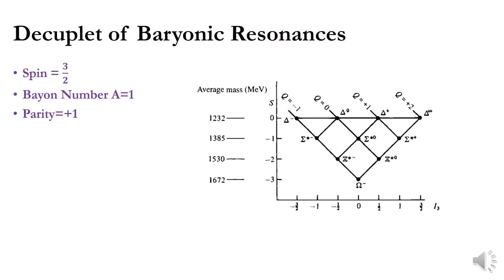There is another symmetrical figure: the decuplet of baryonic resonances. In the S-I₃ plane, the baryonic resonances form a decuplet — a supermultiplet of ten members.